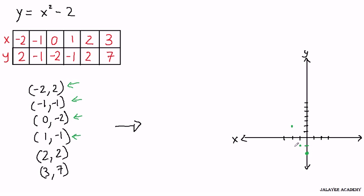Next, 1 comma negative 1. Go to the right 1, and drop down 1. And next, 2 comma 2. So we go to the right 2 and up 2. In the x direction 2, and in the y direction positive 2.